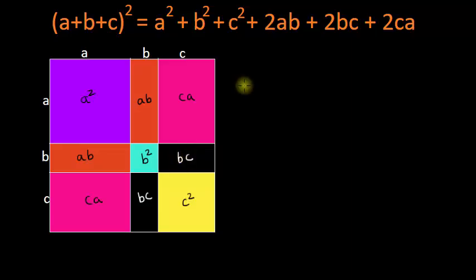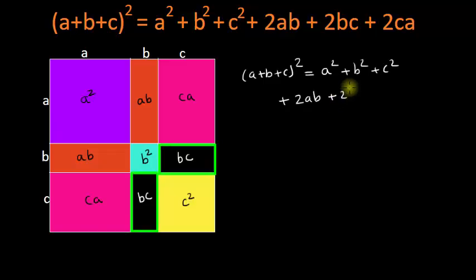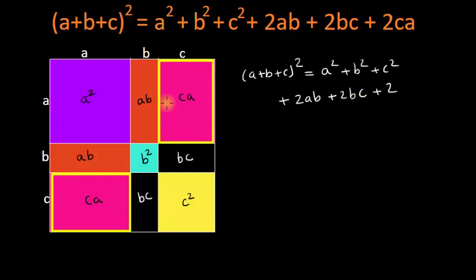So now what can we say about the area of the bigger square? The bigger square has one side equal to a plus b plus c, so its area will be a plus b plus c whole square. This can also be written as the sum of all these individual areas. So this can be written as a square plus b square plus c square plus two times ab plus two times bc plus two times ca.